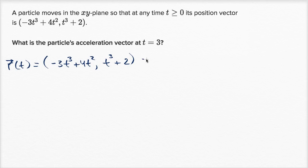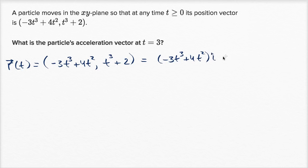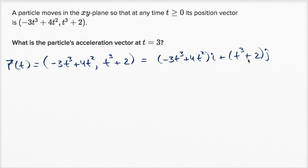Another way of writing this — unit vector notation — is negative three t to the third plus four t squared times the unit vector in the horizontal direction, plus t to the third plus two times the unit vector in the vertical direction. This denotes the same thing: the x component in the horizontal direction and the y component in the vertical direction.